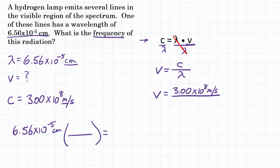We want to convert 6.56 times 10 to the negative 5 centimeters into meters. For our conversion factor, since we're starting with centimeters, centimeters goes on the bottom. Because we want to convert to meters, meters goes on top. The relationship between those two units is that one meter equals 100 centimeters. So 100 goes on the bottom and 1 meter goes on top, and the units of centimeters will cancel out, leaving us with meters.